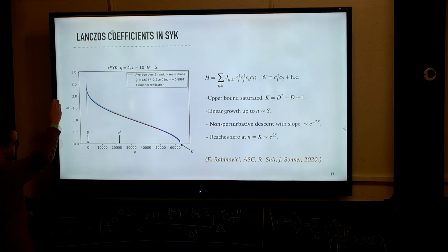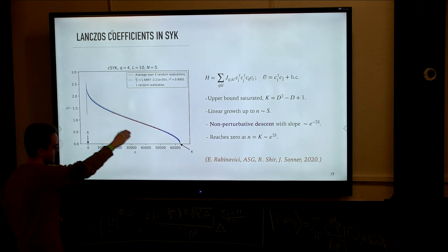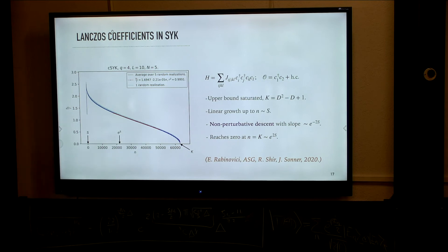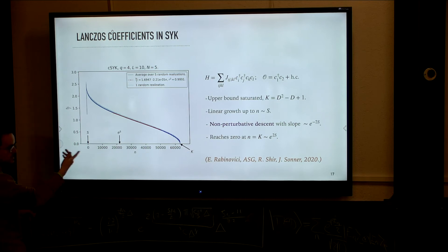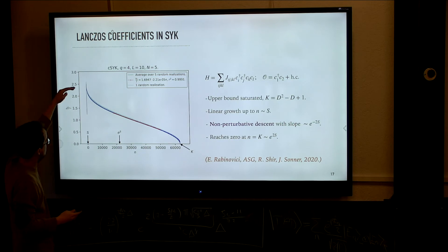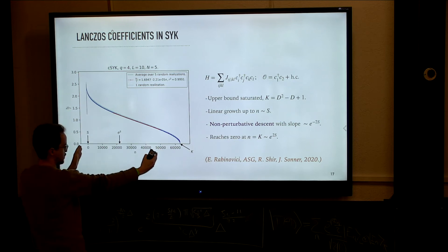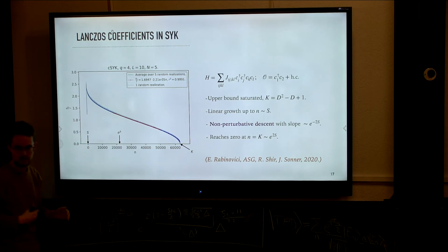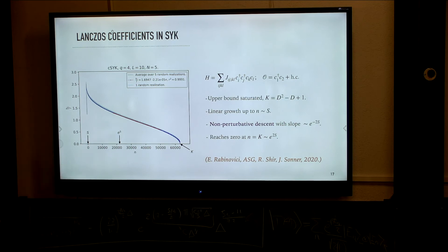It grows initially and then instead of plateauing — which was the naive expectation presented before — it decays very smoothly all the way to zero. The algorithm has to terminate and cannot create arbitrarily many Lanczos coefficients. This happens to be a non-perturbative descent which modifies the asymptotic prediction: the sequence grows up to a value roughly of order system size, then decays to zero in a span of order the Krylov dimension — which is exponential in system size. So the slope is basically of order e^(-2S). It's a non-perturbative correction to the proposed profile.